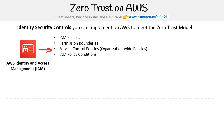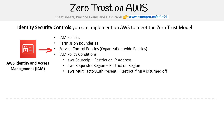Within an IAM policy, there are the concept of conditions — little knobs you can tweak to control access based on a bunch of different factors. There is source IP, so restrict where the IP address is coming from; requested region; multi-factor authentication presence; and current time, so restrict access based on time of day. Maybe your employees should never really be using things at night, and that could be an indicator that someone is doing something malicious, so only give them access during a certain time of day.